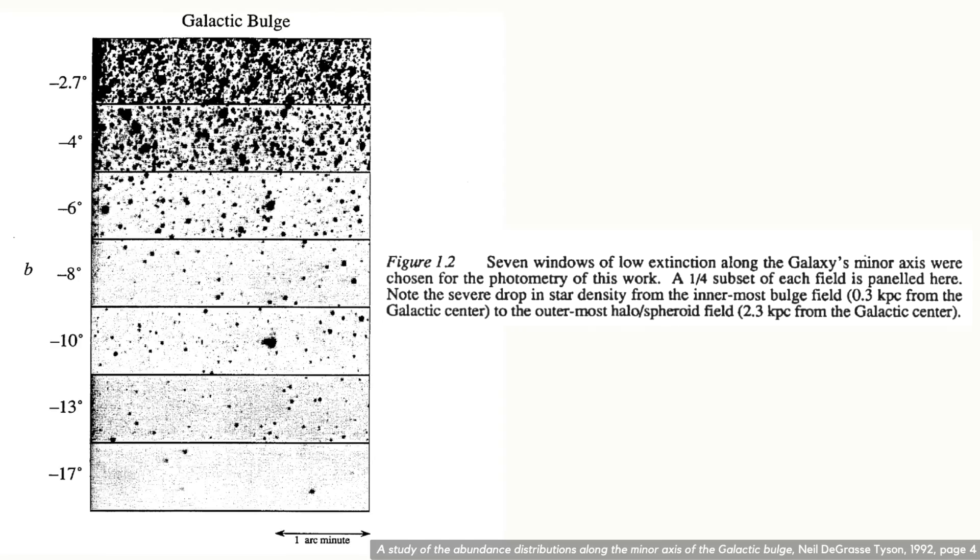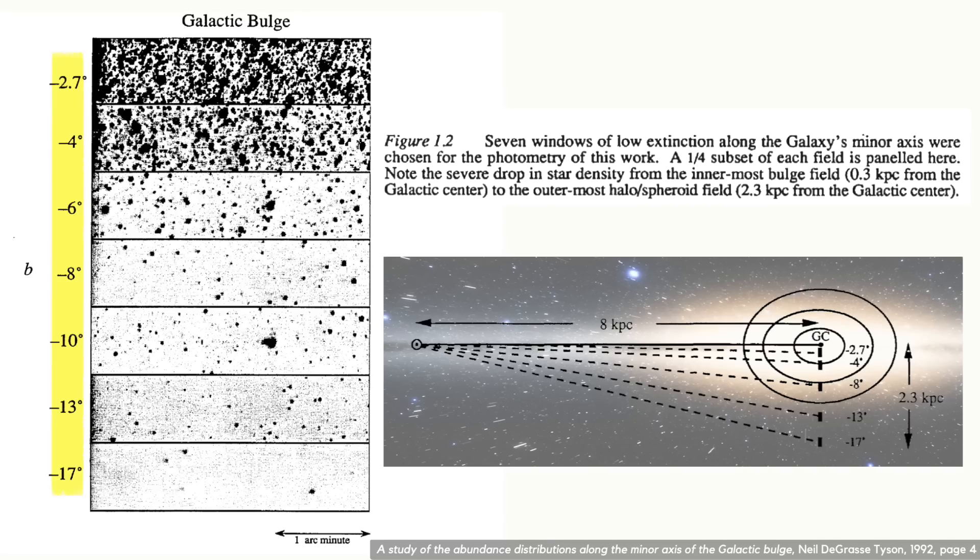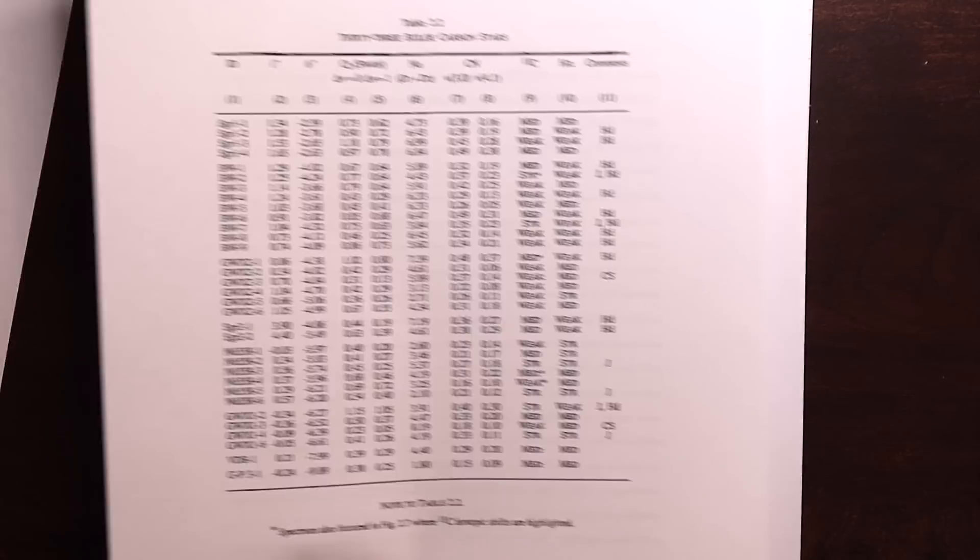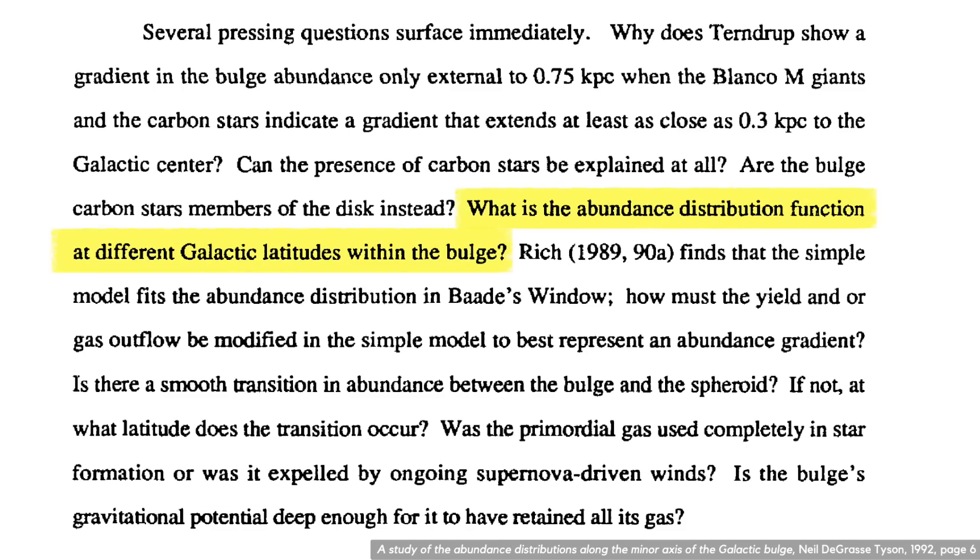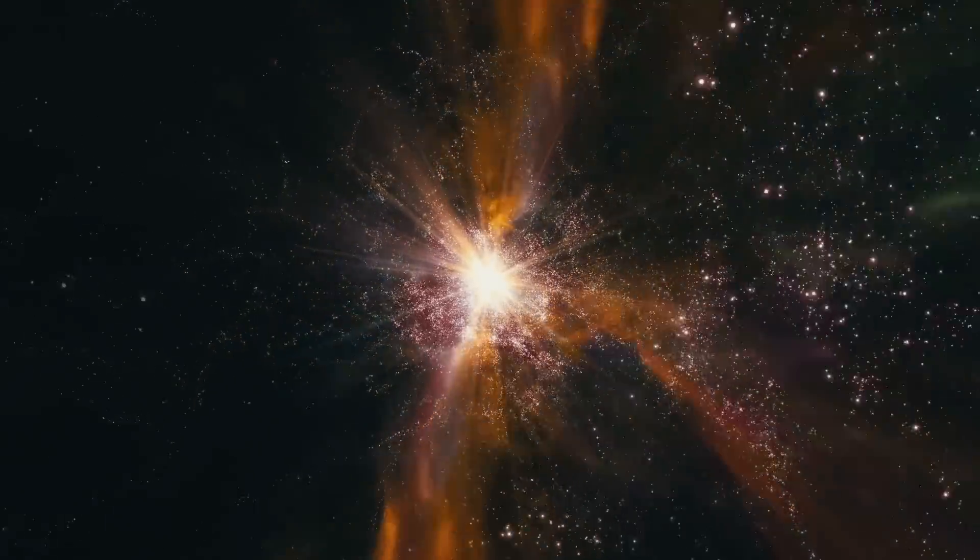These are images of the seven windows and you can notice the steep drop in star density from the innermost bulge to the outermost halo. Each window is named with its latitude. The smaller numbers are looking further out towards the sparse halo. Tyson measured properties of these stars like their chemical abundance and velocities to answer the following questions: What is the abundance distribution function at different galactic latitudes within the bulge? Is there a smooth transition in abundance between the bulge and the spheroid or halo? If not, at what latitude does the transition occur? And was the bulge's primordial gas used completely in star formation or was it expelled by ongoing supernova driven winds?